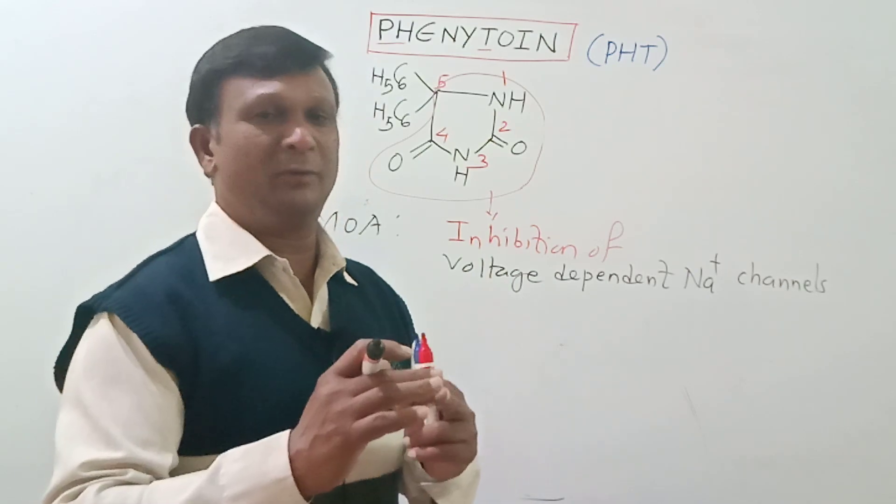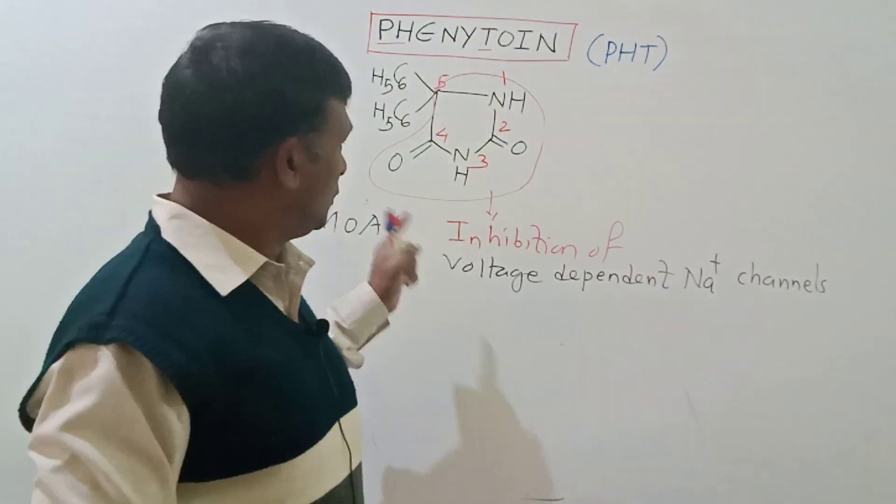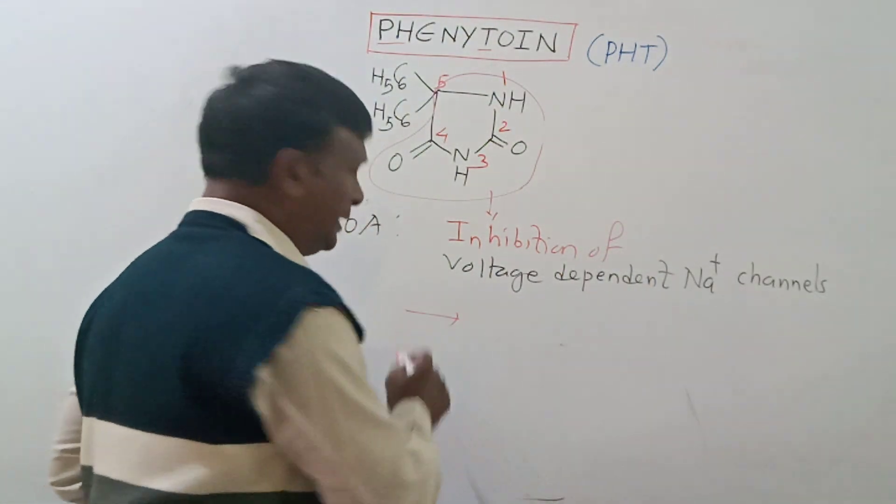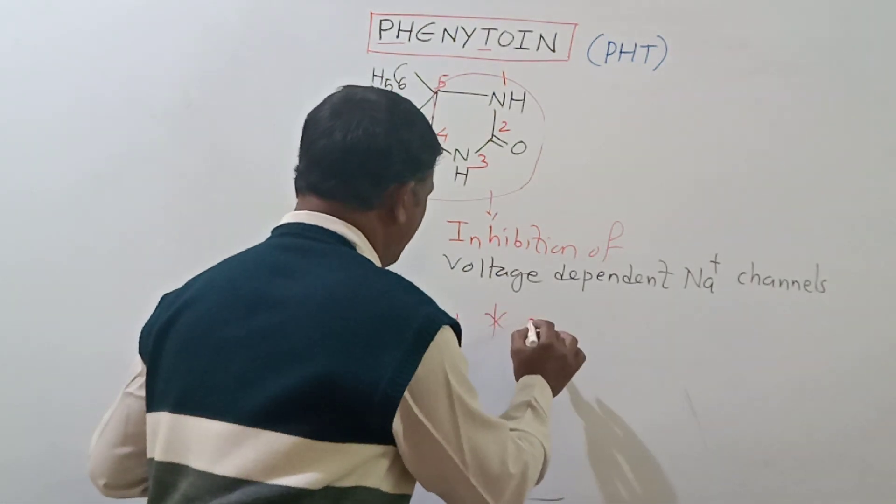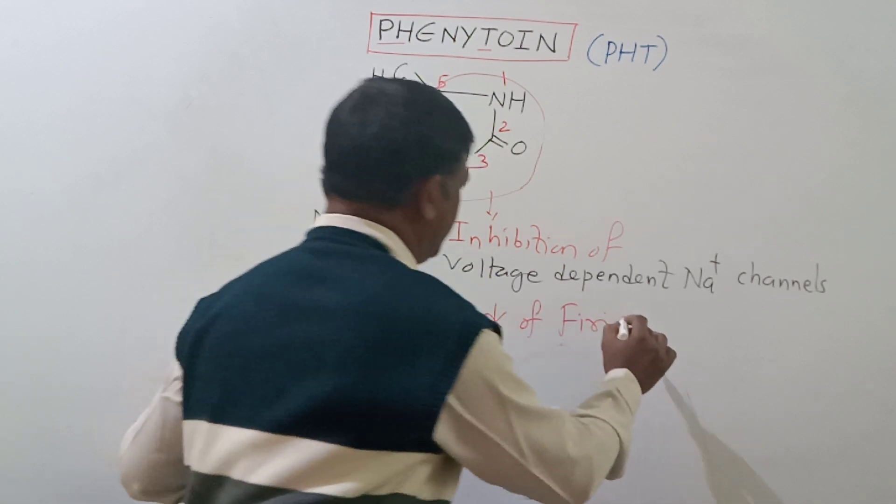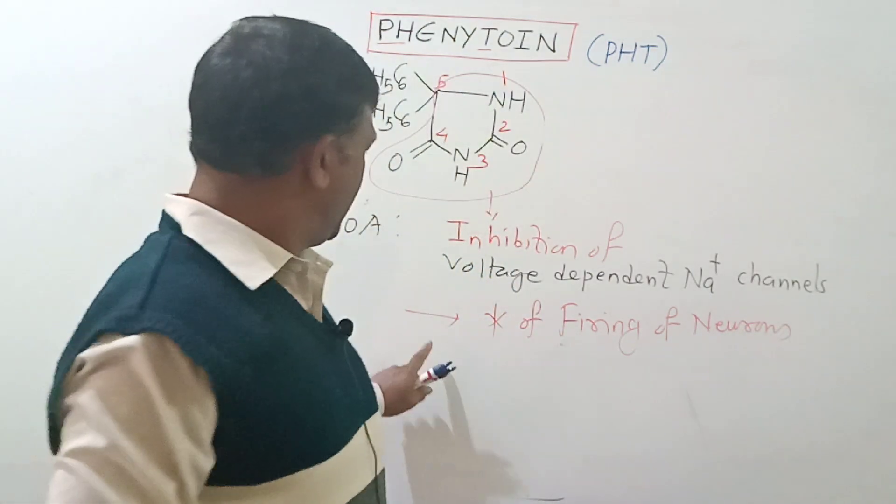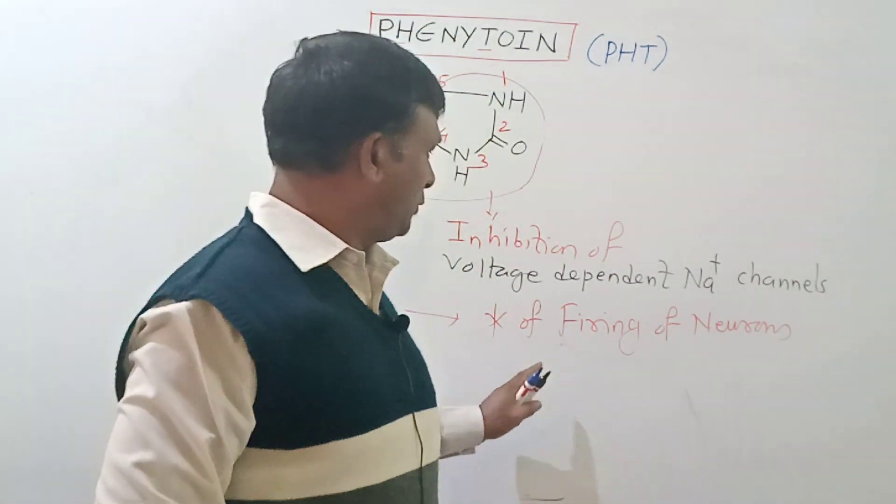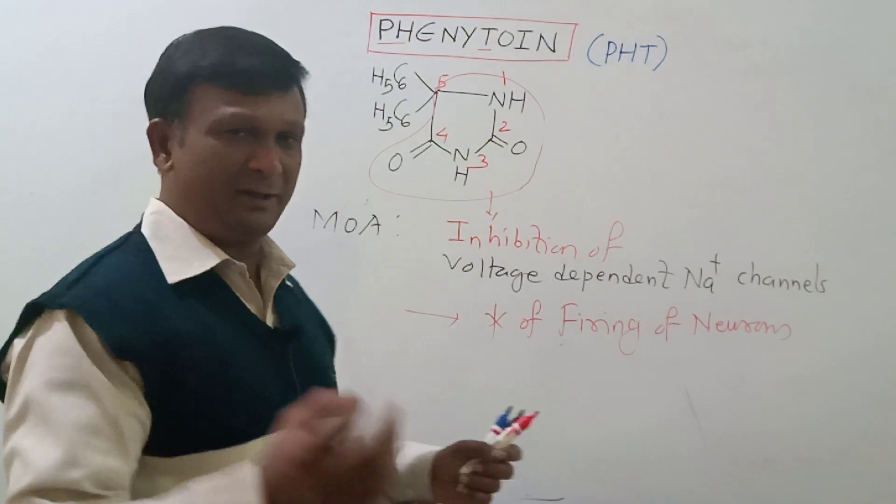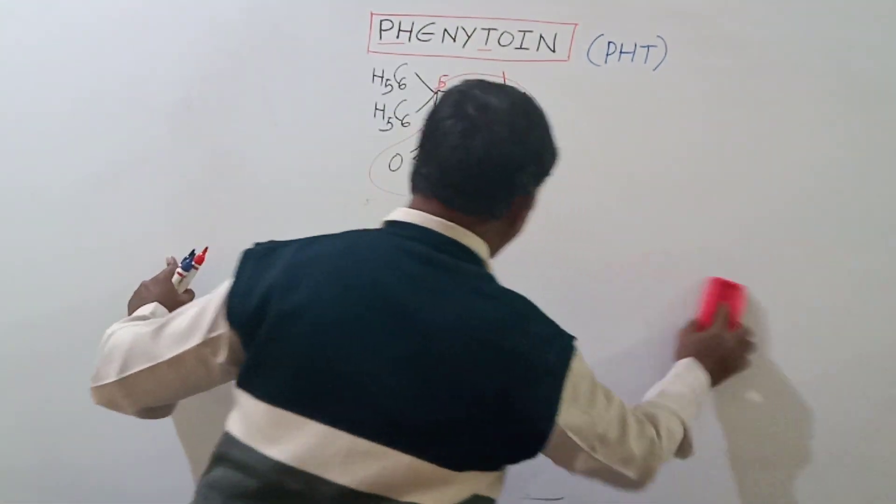For treatment of epilepsy, the general approach is to inhibit the sodium channels so that excessive firing of neurons can be stopped. Phenytoin is found to inhibit the voltage-dependent sodium channel, and this inhibition leads to inhibition of firing of neurons. When excessive firing of neurons is inhibited, the epilepsy may get treated. That is a very simple mechanism of action of this compound.